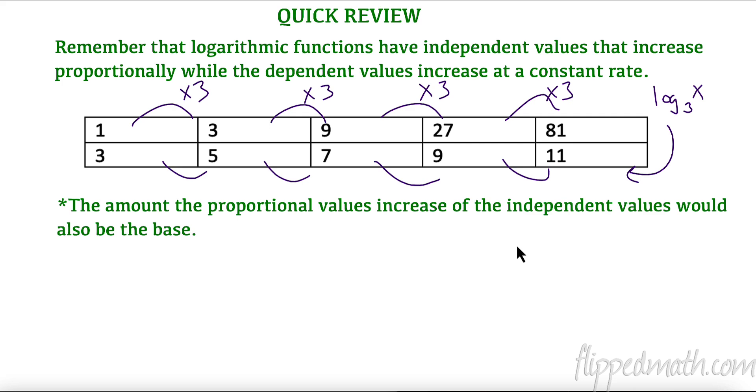Imagine they were switched and this is the dependent and this is the independent. Then that would be three to some variable to get these solutions. This one would be x minus three over two to get that equation. So if we're going to do the inverse or find the log of that, we would have to actually have a log base three. So the proportional increase is actually going to be the base.